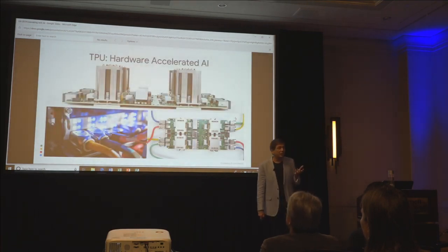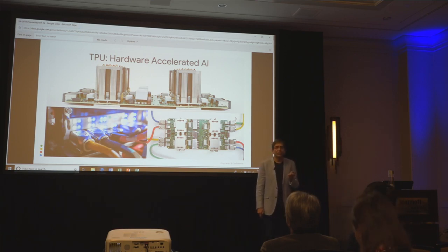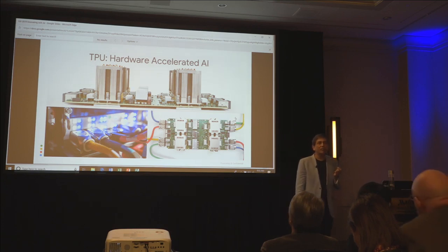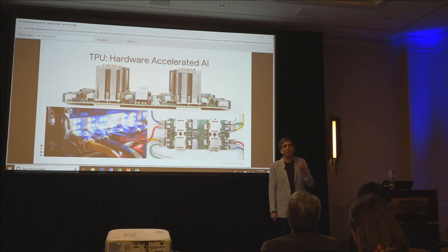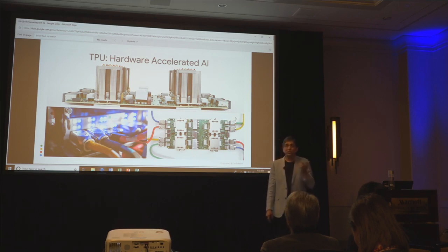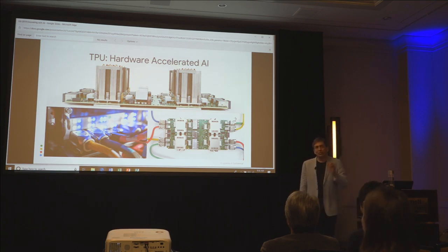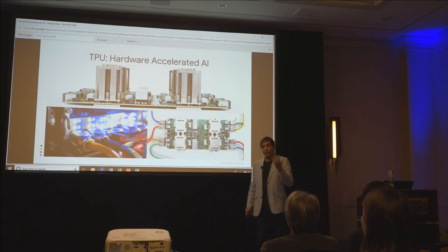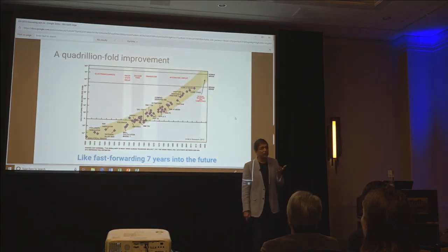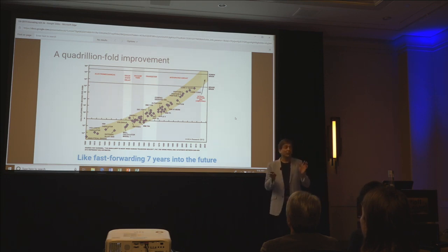Inside these data centers we have chips called TPUs — tensor processing units — basically chips optimized for TensorFlow. We've just announced boards and even USB sticks with TPUs on them that you can use in your own applications. There's also a TPU-type chip available in small edge form factors to run these models. These things have a quadrillion-fold improvement over current state of the art. At Moore's law doubling rates, we are about seven years in the future right now. A bank of these things is all available to you.